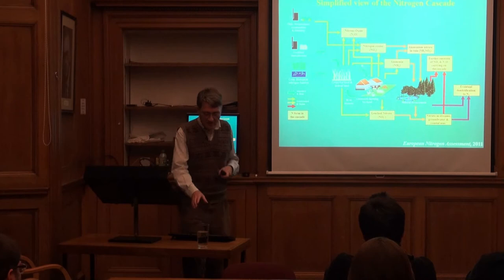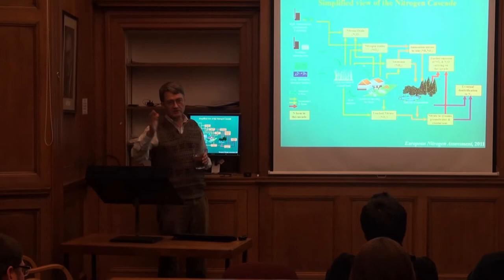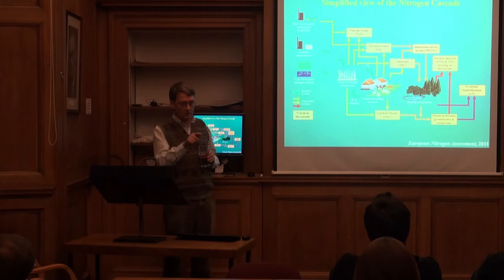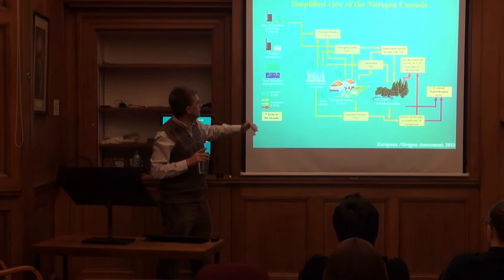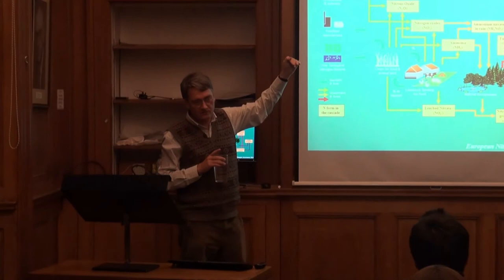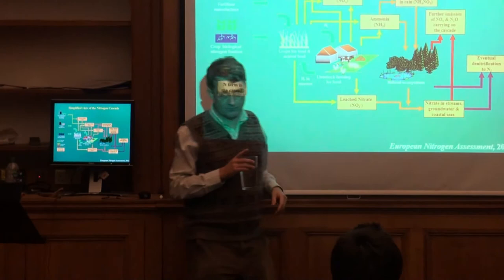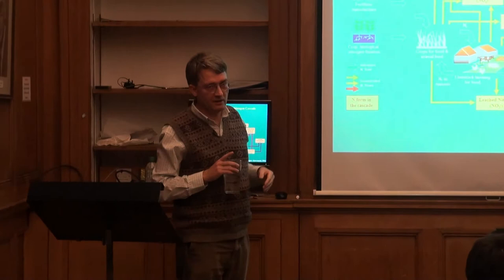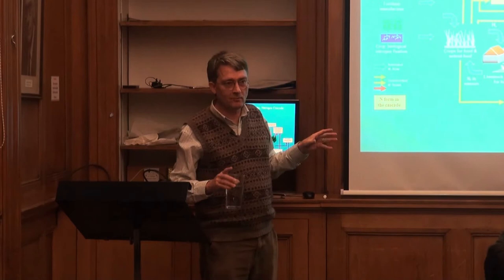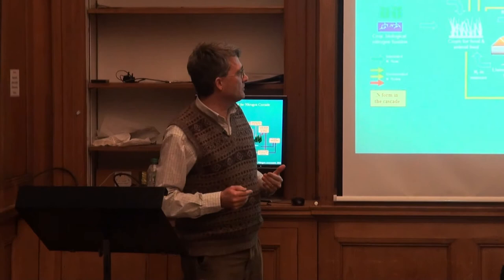The key concept is going from the nitrogen cycle to the nitrogen cascade. Everyone learns the nitrogen cycle at school, but it's really a story about what's meant to happen — this is about what's not meant to happen. We take N2, put lots of energy in, create reactive nitrogen forms, and those forms dissipate energy through nitrous oxide, NOx, and ammonia, which react to form particulate matter, come down in rain, saturate ecosystems, and cause further emissions — until ultimately denitrified back to N2.